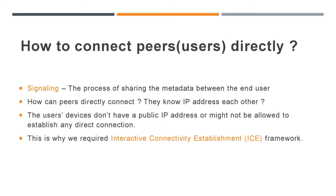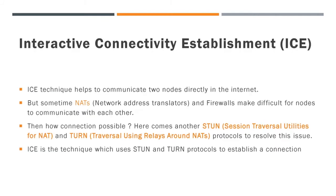Now we understand that signaling is the process of sharing metadata between end users. Next, let us look at how we can get the public IP address of each user. For that, another protocol or framework is required — that is Interactive Connectivity Establishment, or ICE. ICE technique helps two nodes communicate directly over the internet. Network address translators and firewalls make it difficult for end users to communicate with each other. Here come two interesting frameworks: Session Traversal Utilities for NAT (STUN) and Traversal Using Relays around NATs (TURN), which resolve this issue. Basically, ICE is the technique which uses STUN and TURN protocols to establish a connection.